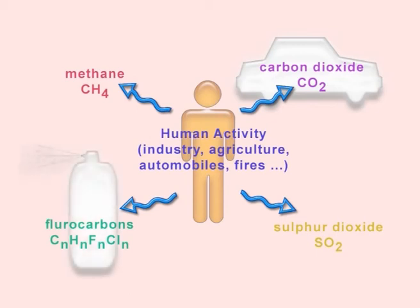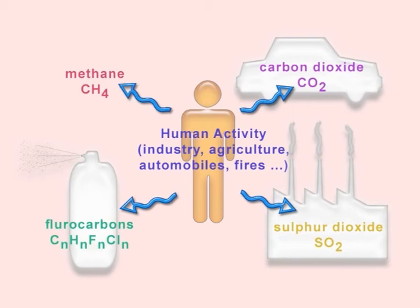Fluorocarbons in some aerosol sprays and refrigerator coolants destroy the ozone, increasing the amount of UV light that reaches the Earth. And sulphur dioxide released by burning coal causes acid rain that damages trees. We face a challenge to find ways to reduce the amounts of these gases we emit and so protect the atmosphere we need in order to survive.